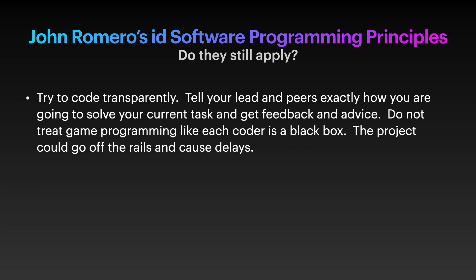Ninth, try to code transparently. Tell your lead and peers exactly how you're going to solve your current task and get feedback and advice. Do not treat game programming like each coder is a black box. The project could go off the rails and cause delays. This is very true if you're programming on a team. Often the people you are presenting your plan of action to may have done something similar in the past and will show you a better way to do it. If you are a solo game developer who does all his own code and graphics, then this rule doesn't apply.